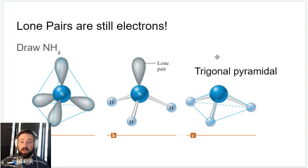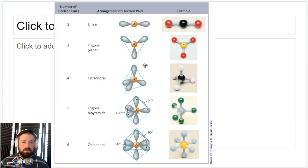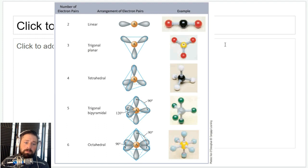We have to distinguish between electron geometry, where we look at all the electron groups, and molecular geometry, where we look only at the electron groups that make up bonds — ignoring the lone pairs.